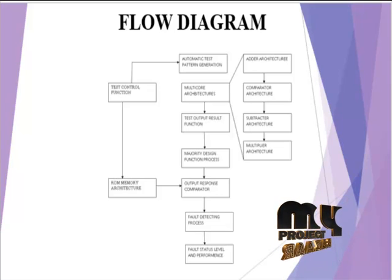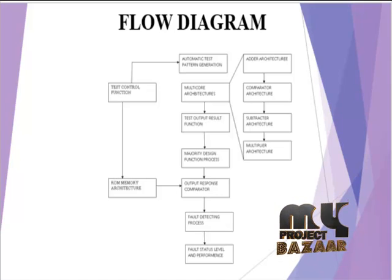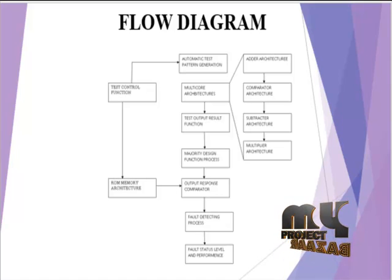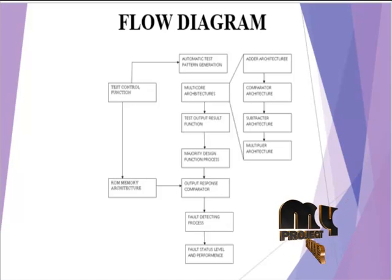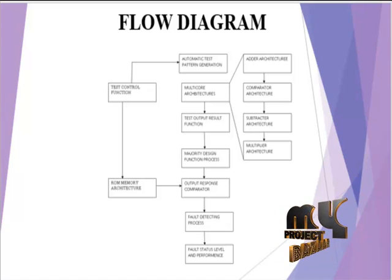From the multi-core architecture we get the result and proceed to the testing process. Testing of cores through majority voting has been used in previous research, focused on online testing and correcting good cores. We perform post-manufacturing testing, get partial core results, and majority designs complete the full core testing. The objective is to test multiple cores at the cost of a single core process using majority values.